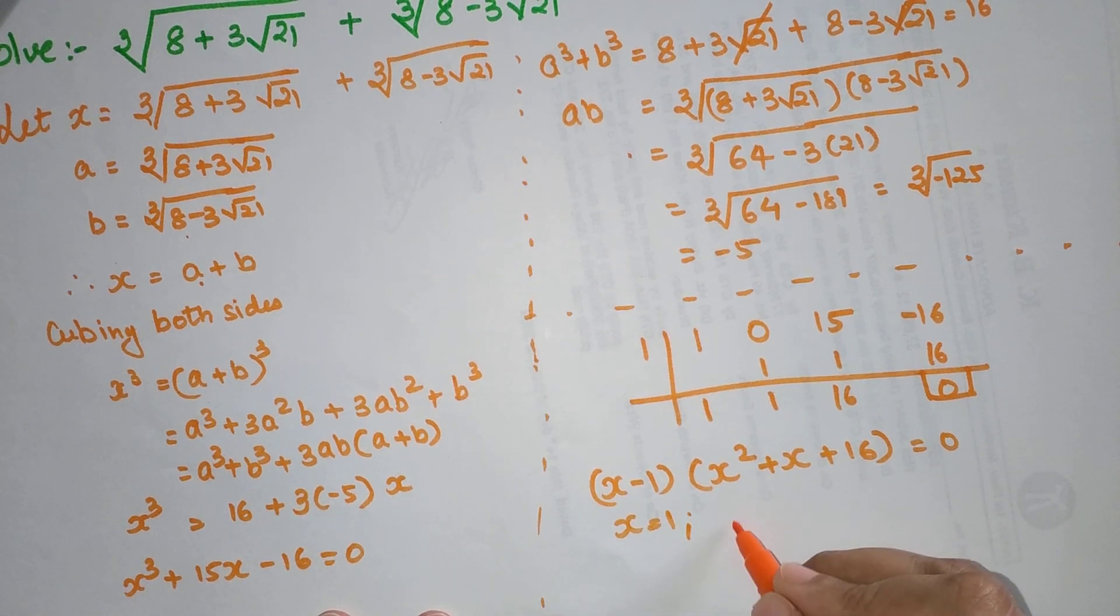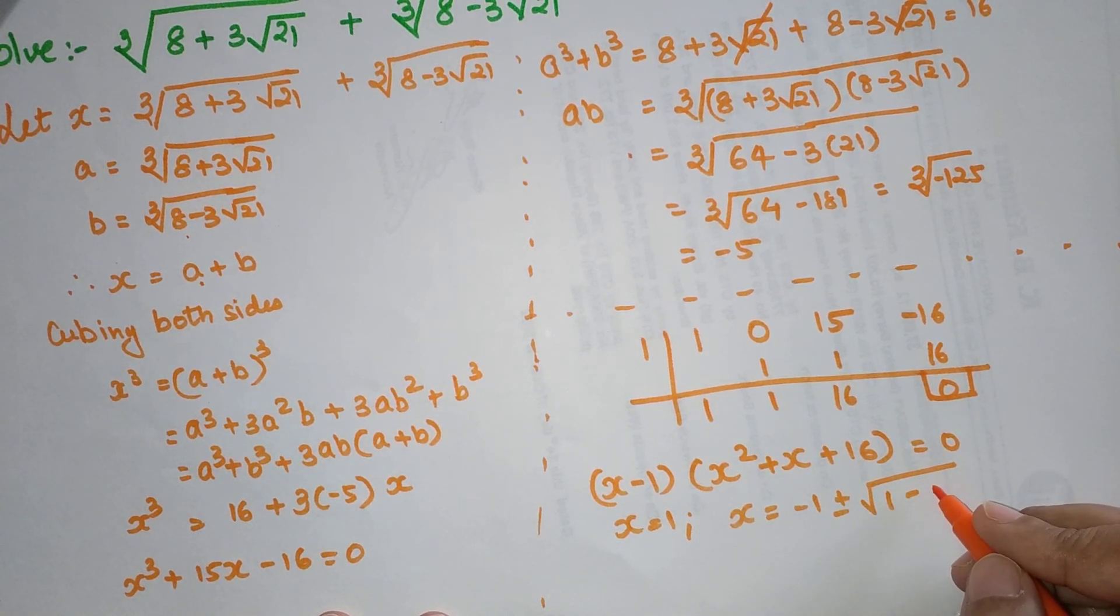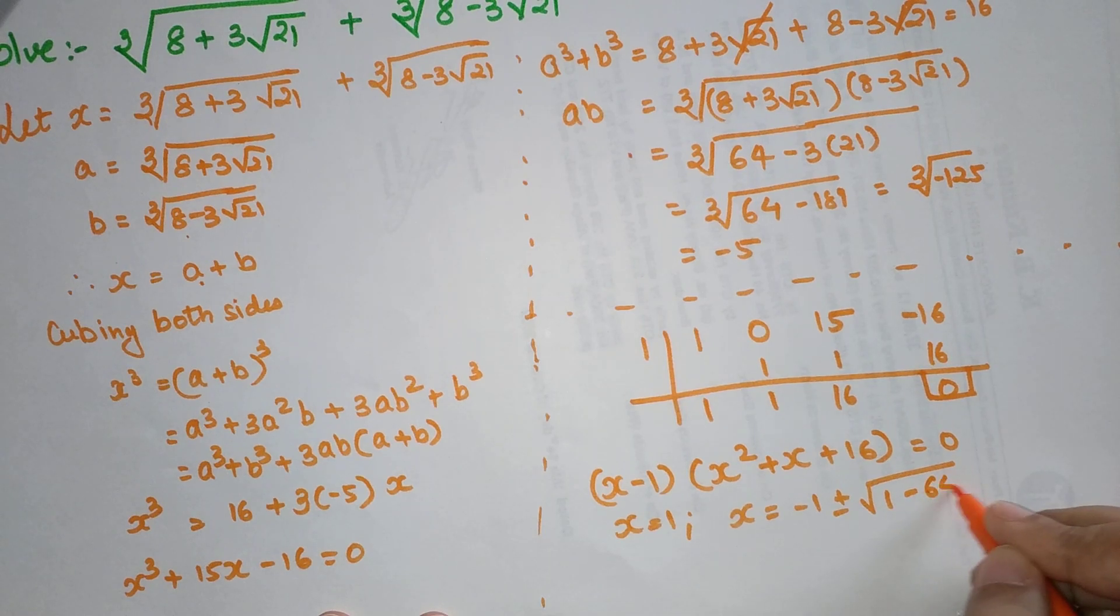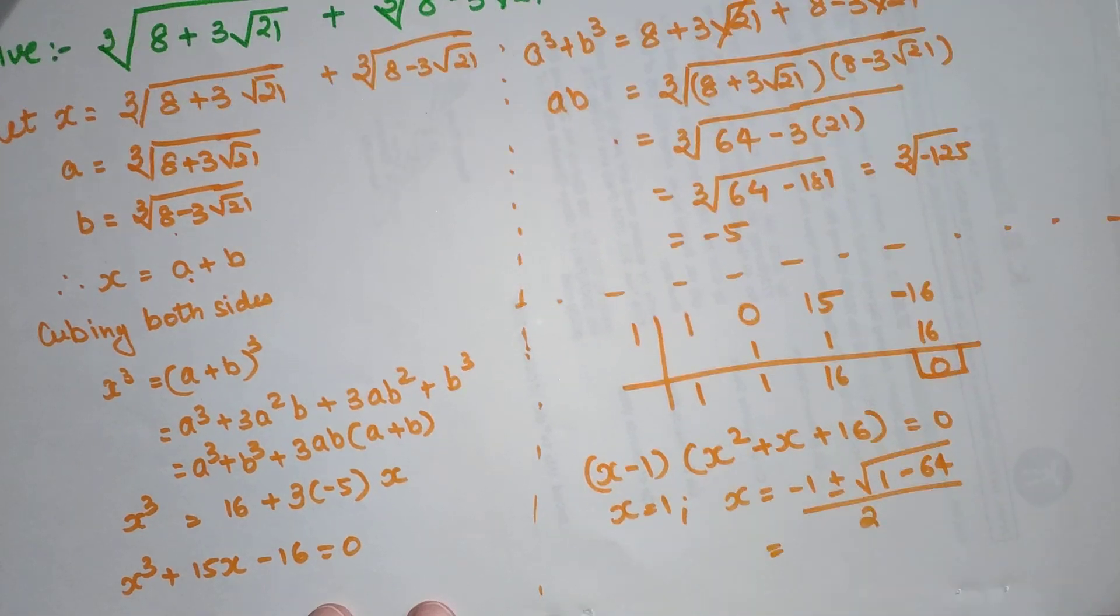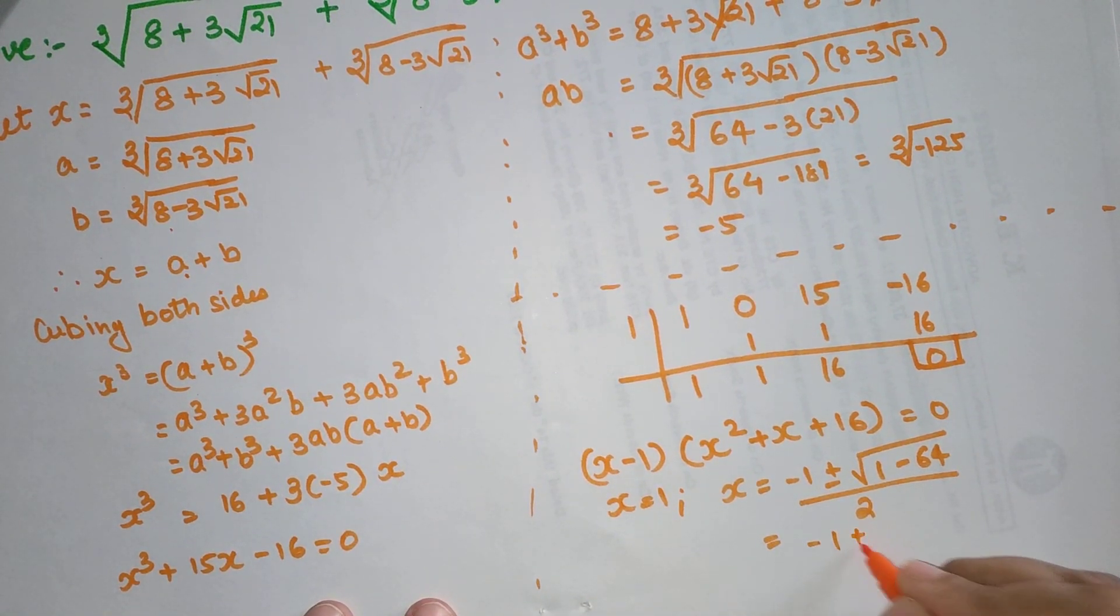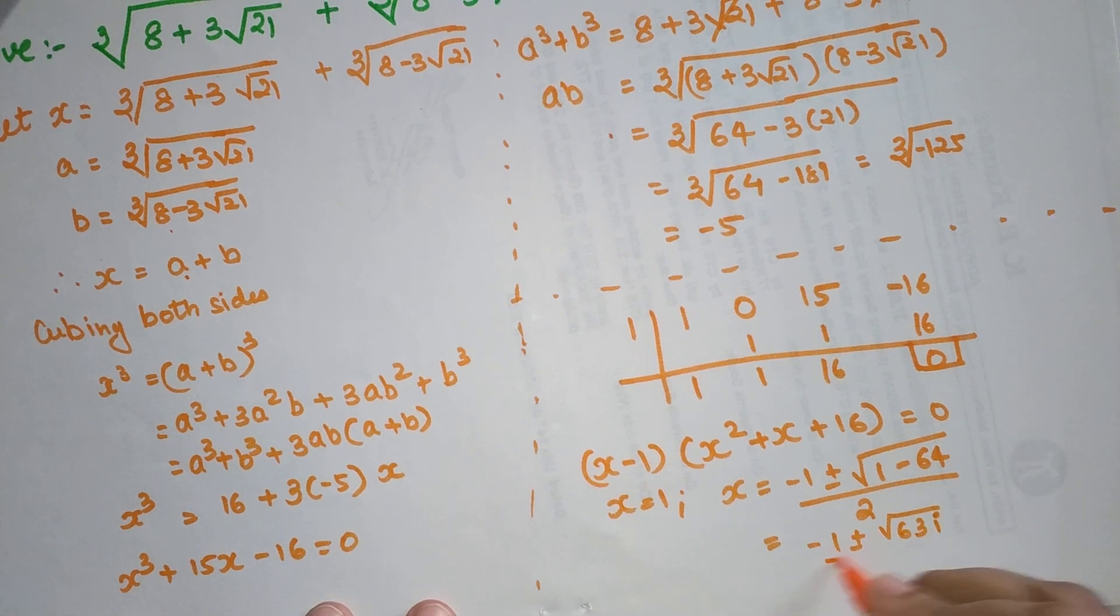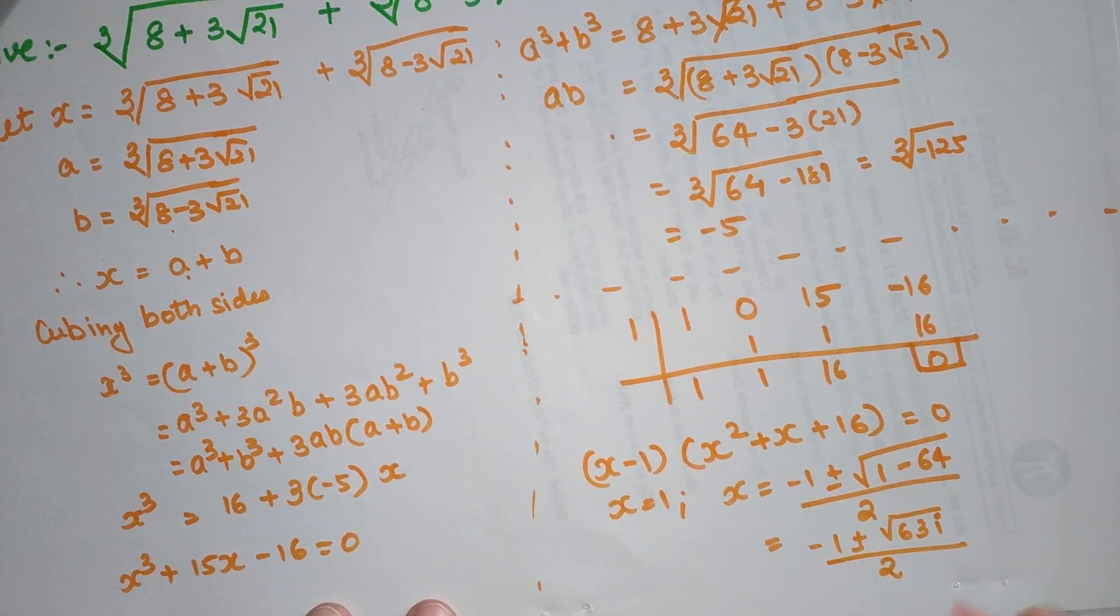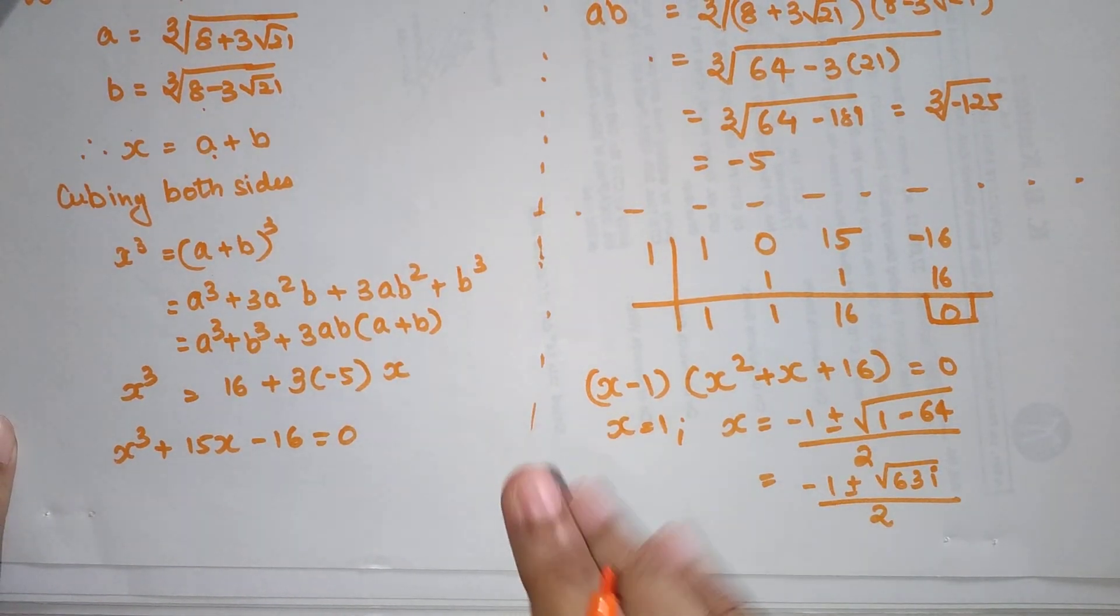But for this particular quadratic, if I start solving, x equals minus 1 plus minus root of 1 minus 4 times 16, that is minus 64, upon 2. So this value of x is coming out to be a complex number.